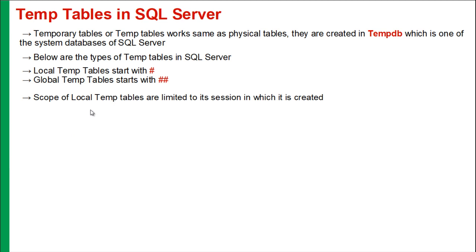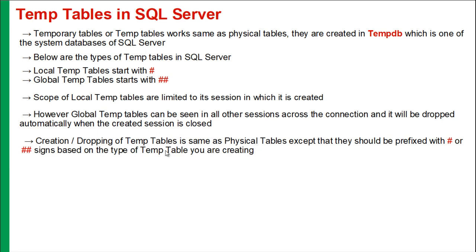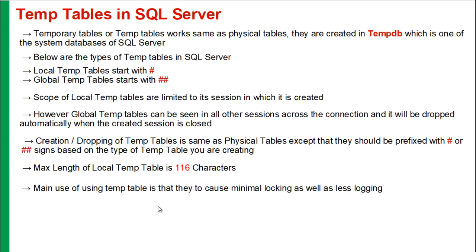The scope of a local temp table is limited to the session in which it is created. However, global temp tables can be accessed across other sessions. However, if the created session is closed, it will not be accessible — it will be dropped automatically. The creation and dropping of temp tables is the same as physical tables. You can create a temp table using the CREATE statement and drop it using the DROP statement. The max length of a local temp table is 116 characters. The main use of a local temp table is to create minimal logging.